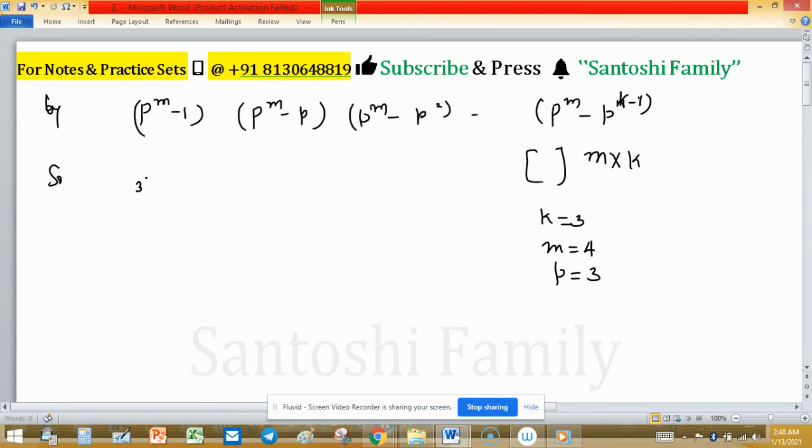So 3 raised to the power 4 minus 1, times 3 raised to the power 4 minus 3, times 3 raised to the power 4 minus 3 squared. This will go up to k minus 1, and k is 3, so 3 minus 1 is 2, so this will end here.